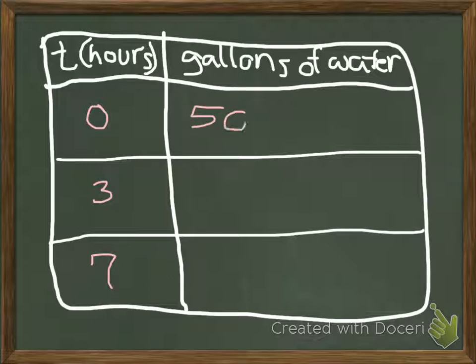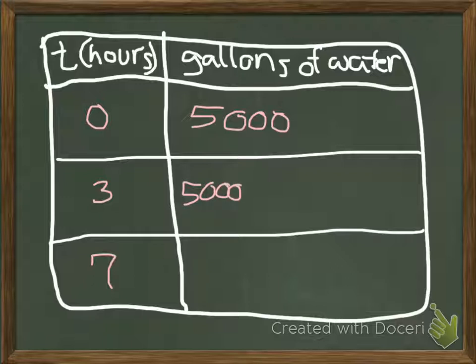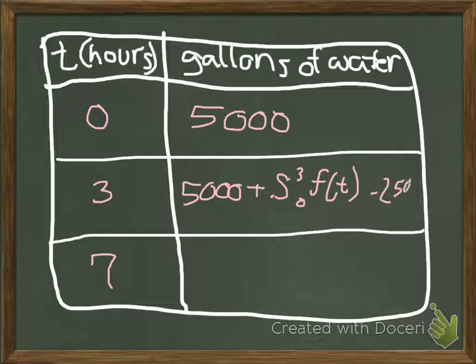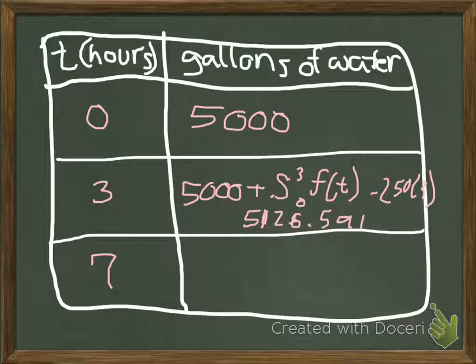That answers your first one - it's 5000 gallons. And you do the integration from 0 to 3 of F(t) minus 250 times 3, and you put that in your calculator and you get 5,126.591, and you insert that in your next slot.